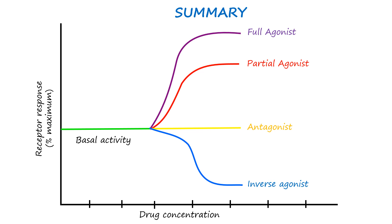Before summarizing, we should note that receptors exhibit a certain level of activity without any external substance binding to them. This is called the constitutive, intrinsic, or baseline activity of a receptor. The baseline activity is the focal point for classifying a drug's activity when it binds to the receptor. A full agonist activates the receptor to its maximum potential, producing the maximum possible response above baseline, and is said to have an efficacy of plus one.